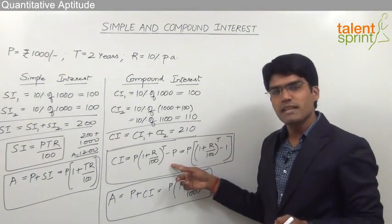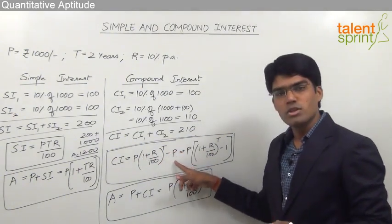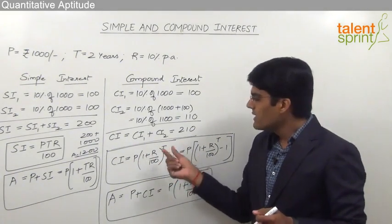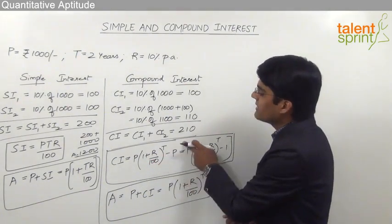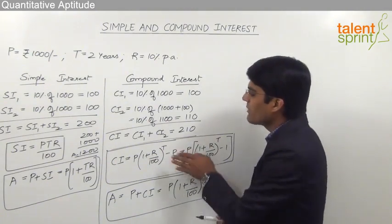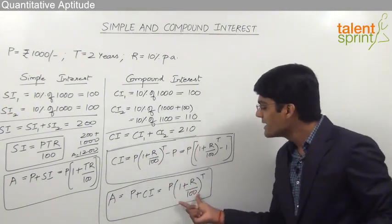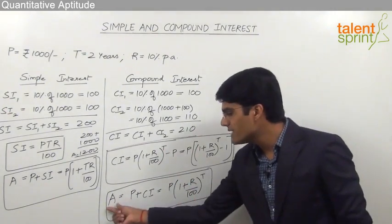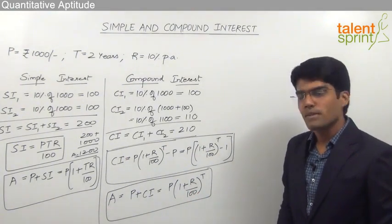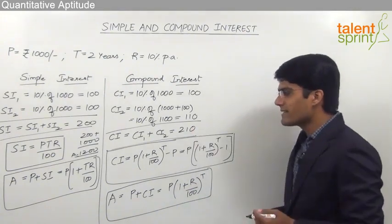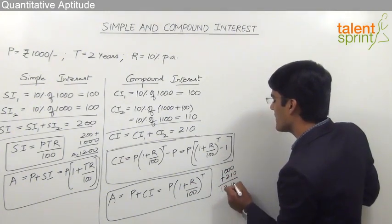From the CI formula, CI = P × (1 + R/100)^T − P. When we add principal P to find the total amount A, the −P and +P cancel, leaving A = P × (1 + R/100)^T. So the total amount in case of compound interest is P × (1 + R/100)^T. Here the interest is 210 rupees and the total amount is 1000 + 210 = 1210 rupees.